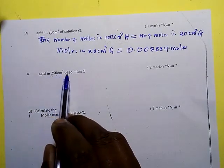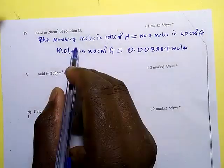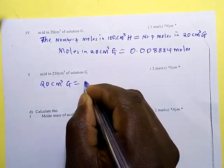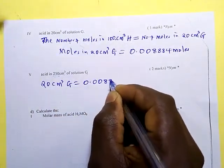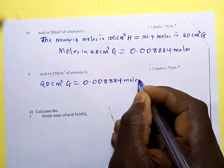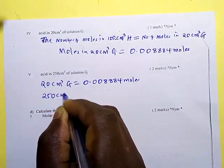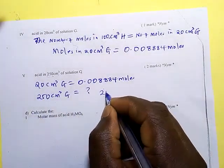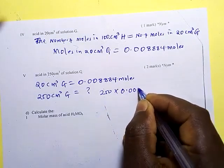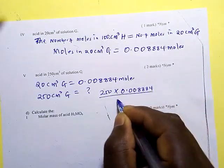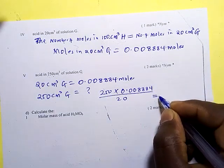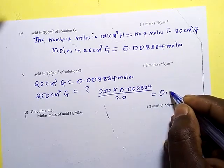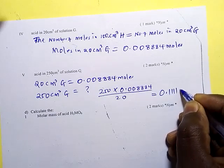Now determine the number of moles in 250 centimeters cubed of solution G. We know 20 centimeters cubed of solution G contains 0.008884 moles, so 250 centimeters cubed contains 250 × 0.008884 ÷ 20, which gives us 0.111 moles.